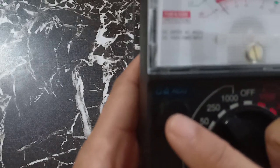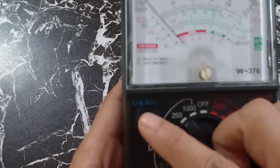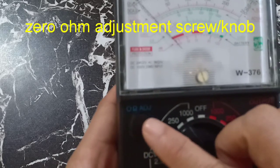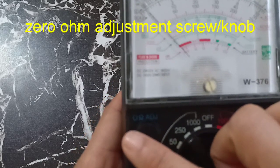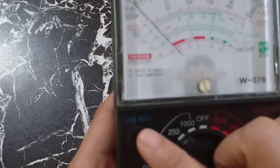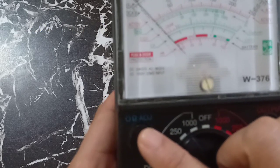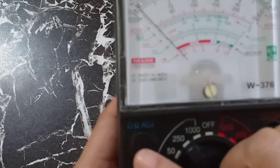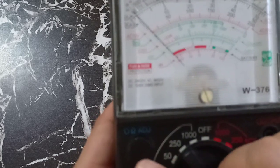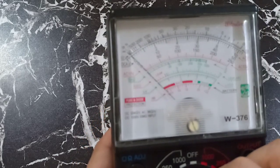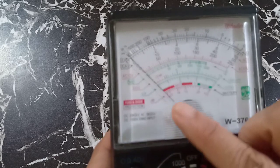This one is called the zero ohm adjustment screw or the zero ohm adjustment knob. These screws or knobs help us set the tester to zero.